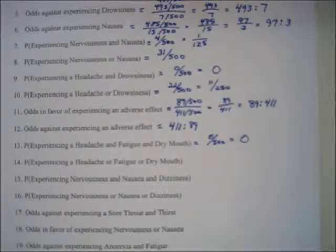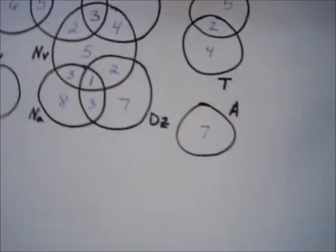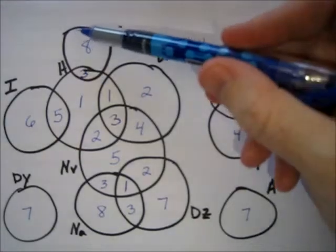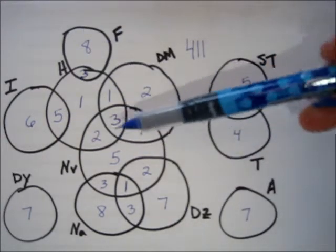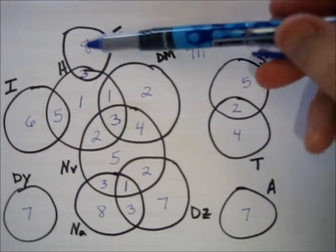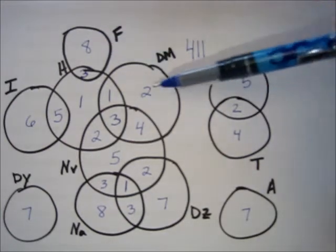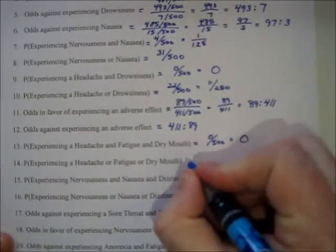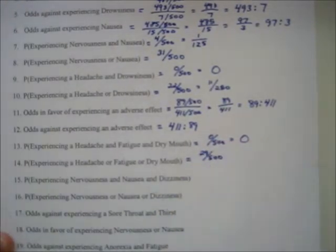Problem 14: probability of experiencing a headache or fatigue or dry mouth. Now we've switched to union — add up everything in fatigue, headache, and dry mouth. That's 15 inside headache plus 8 more is 23, plus 6 more is 29. So 29 out of 500.